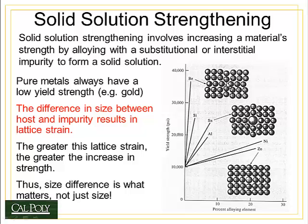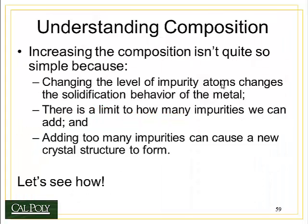The same thing happens when I add beryllium, only in reverse. Now I've added a very small atom, which causes the same lattice strain but in tension. As the dislocation travels along, it also gets repelled by that lattice strain field, so the dislocation is once again blocked and we have an increase in strength. This is why pure metals are always weaker than alloyed metals, and is one of the main reasons that we alloy materials.